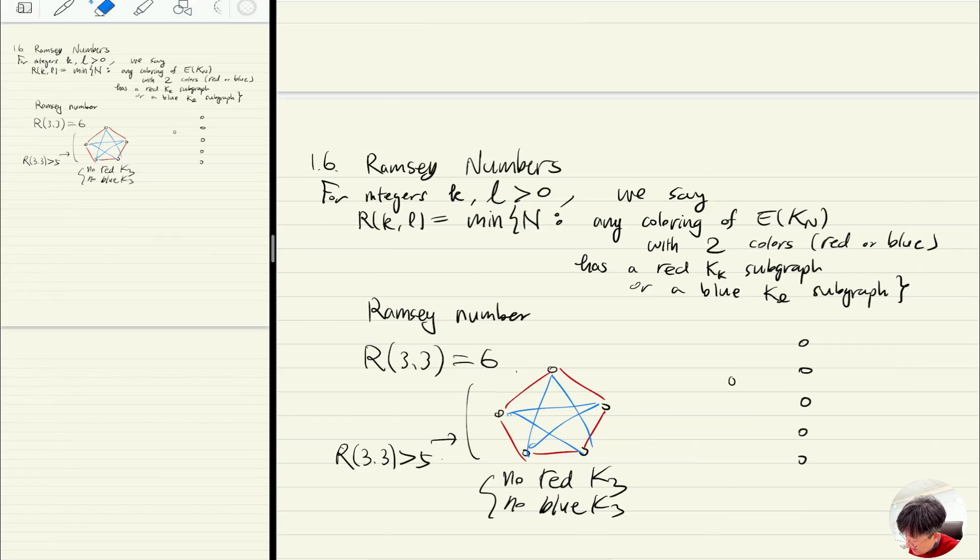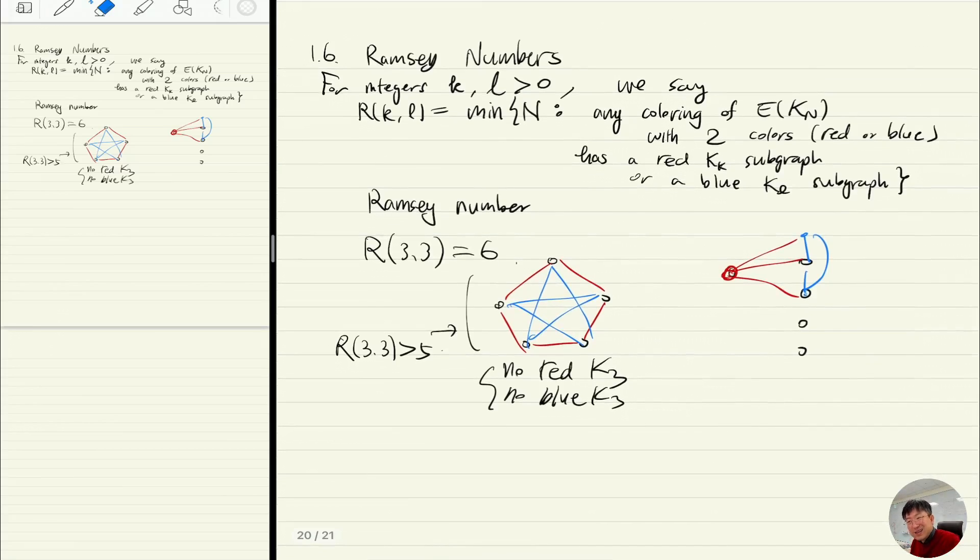Whereas, if I have six vertices, then pick one vertex. Three of these edges are red or three of the edges are blue by the pigeonhole principle. I can assume by symmetry that three of them are red. If any one of these edges joining the neighbors is red, then you have a triangle. So I can assume this is blue, that's blue, and that's blue, so then you have a blue triangle. This proves that R(3,3) is at most 6.